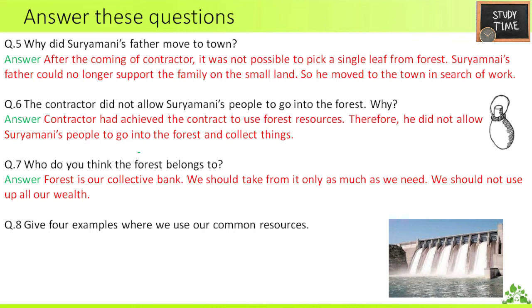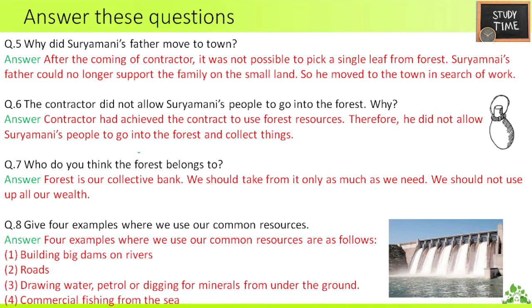Seventh — who do you think the forest belongs to? Forest is our collective bank; we should take from it only as much as we need and should not use up all our wealth. Eighth — give four examples where we use our common resources: building big dams on rivers, constructing roads, drawing water, patrolling or digging for minerals from under the ground, and commercial fishing from the sea.